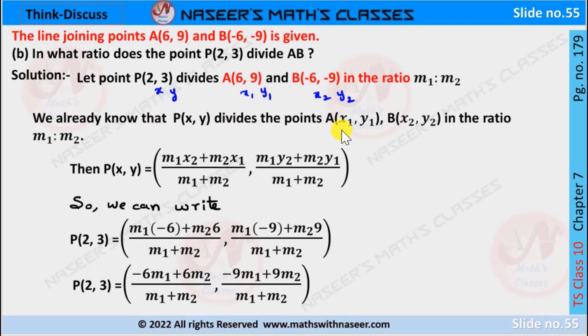We already know that P divides the points A(x1,y1) and B(x2,y2) in the ratio m1 is to m2. Then the section formula is given by P(x,y) equals (m1*x2 + m2*x1)/(m1 + m2), (m1*y2 + m2*y1)/(m1 + m2). So we can write after substituting the x, y and x1, y1 and x2, y2 values, it can be written as P(2,3) equals...